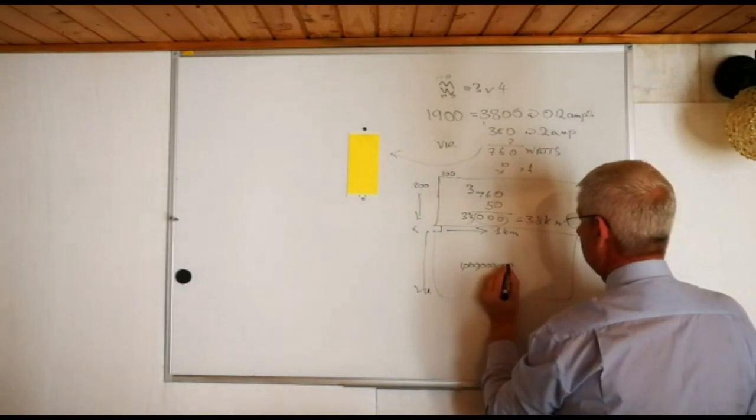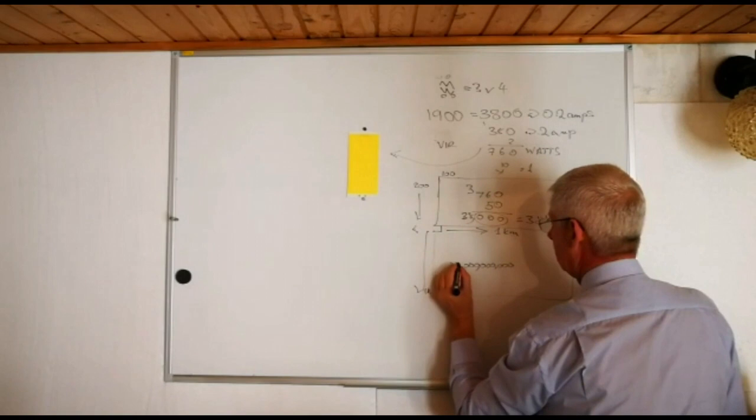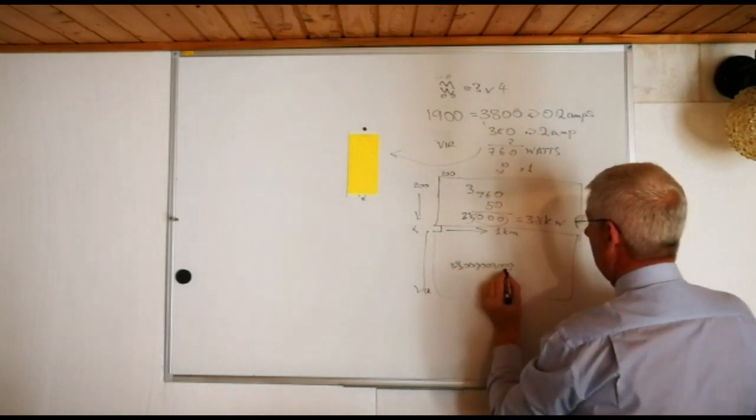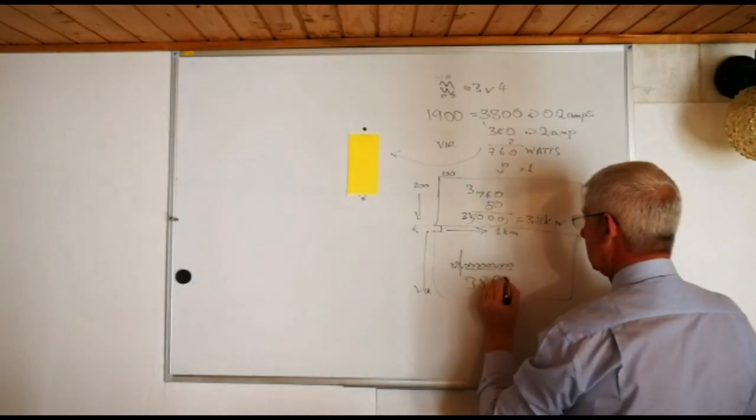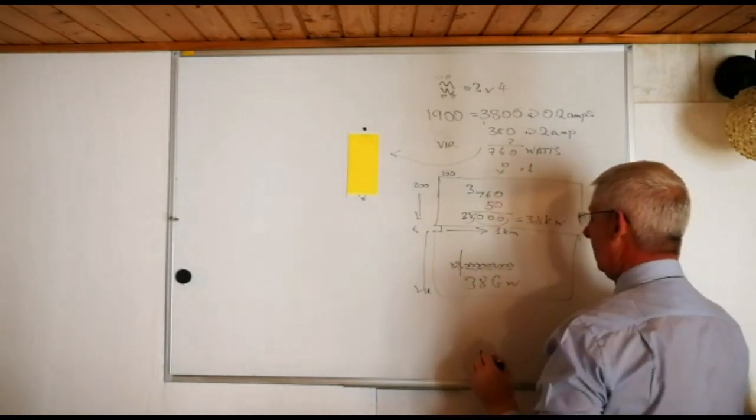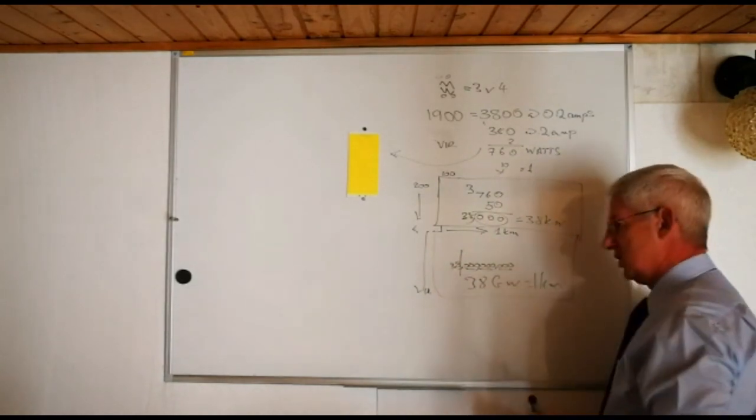1, 2, 3, and 1 times 38 gives us 38, so we've got hundreds, millions, billions, gigawatts. 38 gigawatts of power output is for 1 kilometer squared.